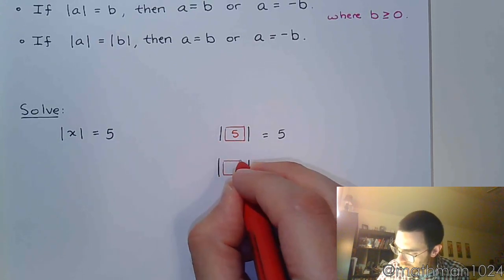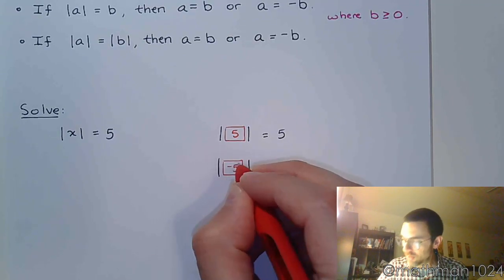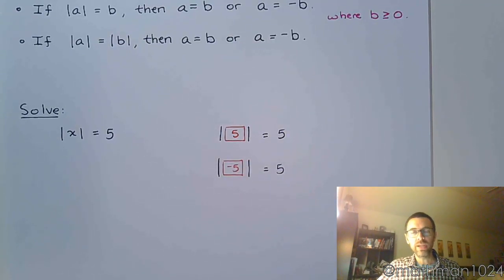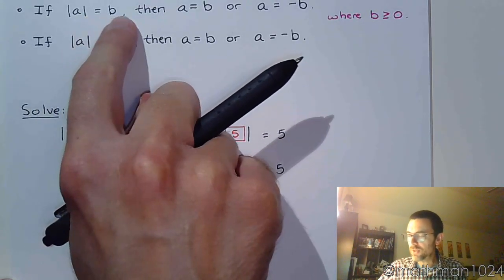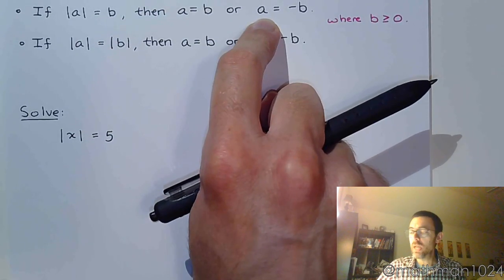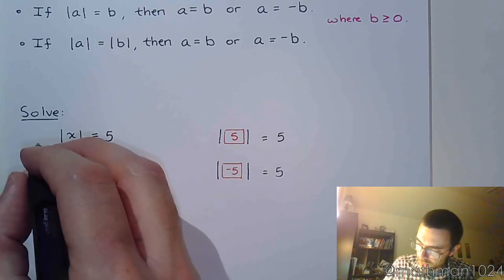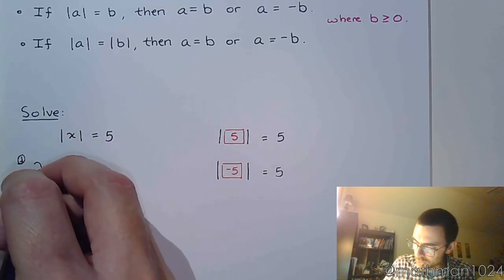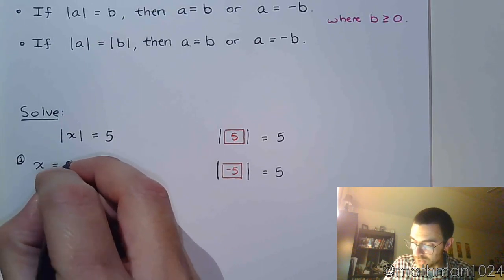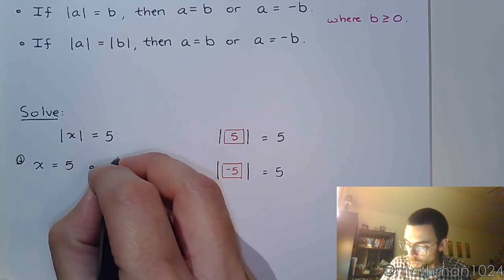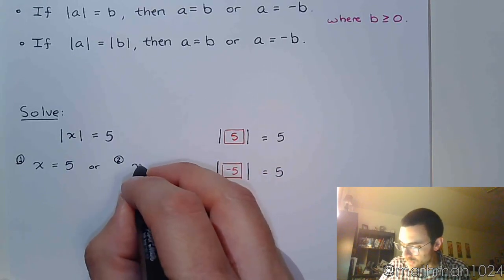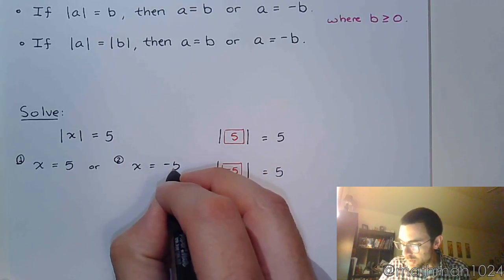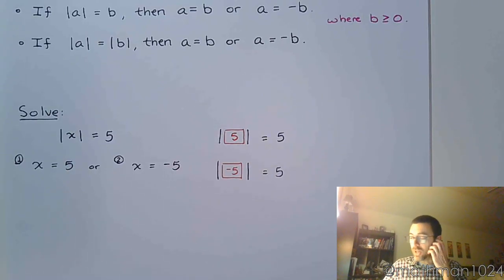There is another value that we could plug into this absolute value, and that would be negative five. Either of these numbers will be exactly five units away from zero when you look at this on the number line. Applying the first rule, if the absolute value is equal to a number, then we have these two options. Either the value inside the expression is equal to that number, five, or whatever's inside the absolute value has to equal the opposite of that, negative five. So in a lot of these absolute value equations, we get two solutions.